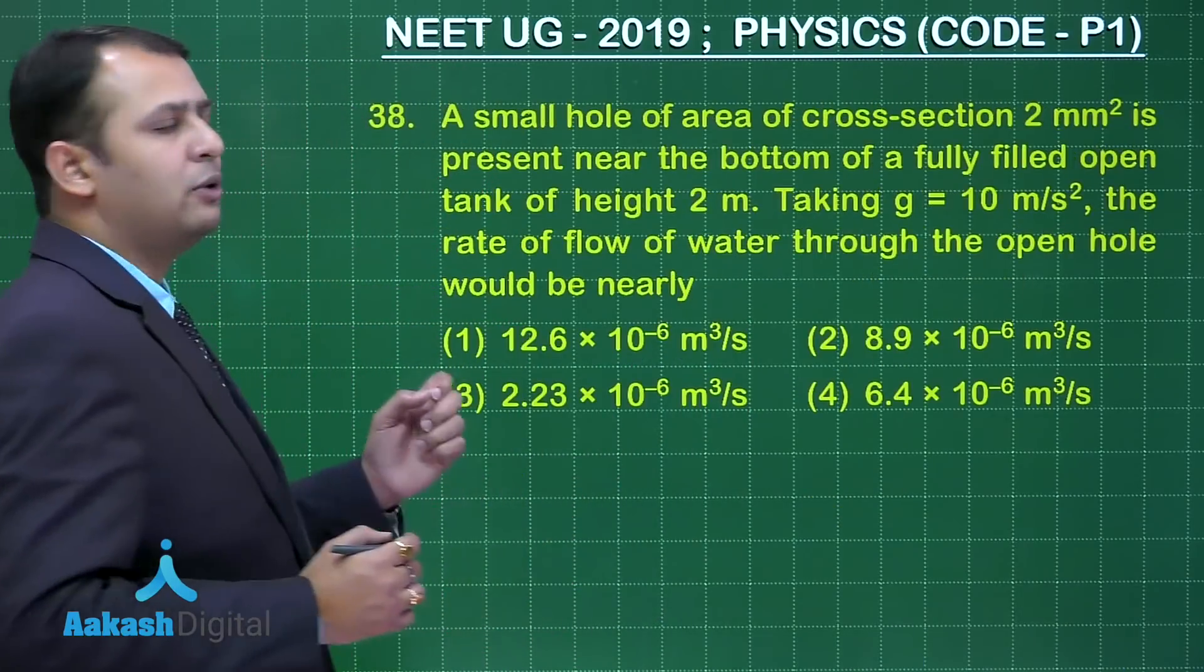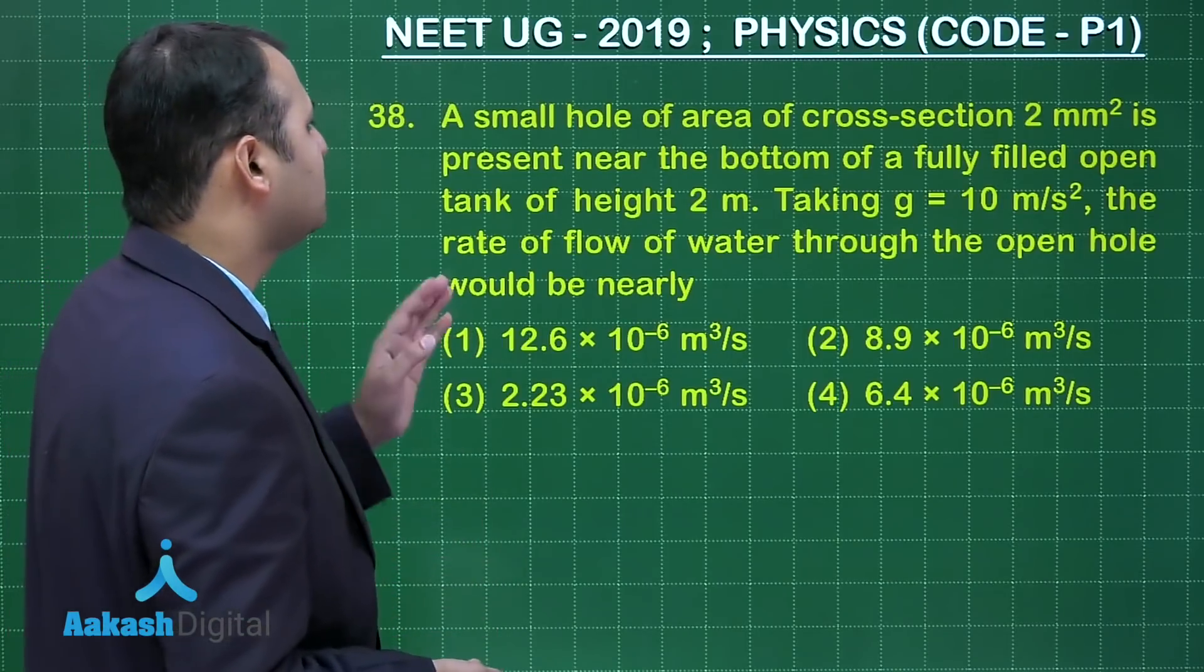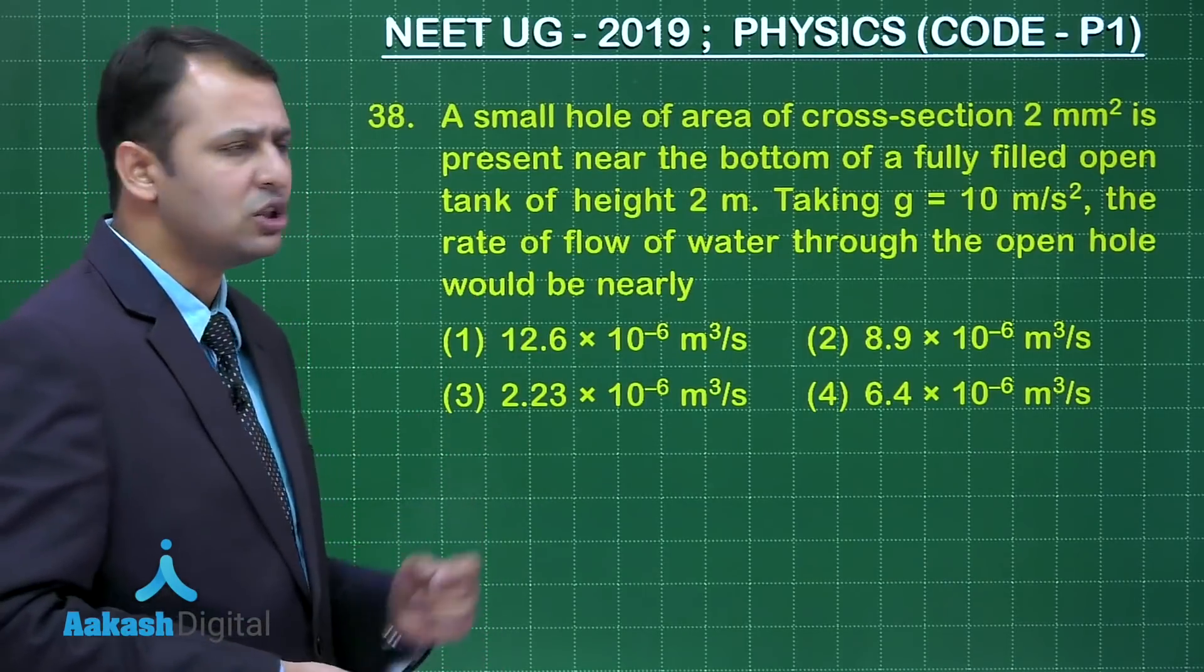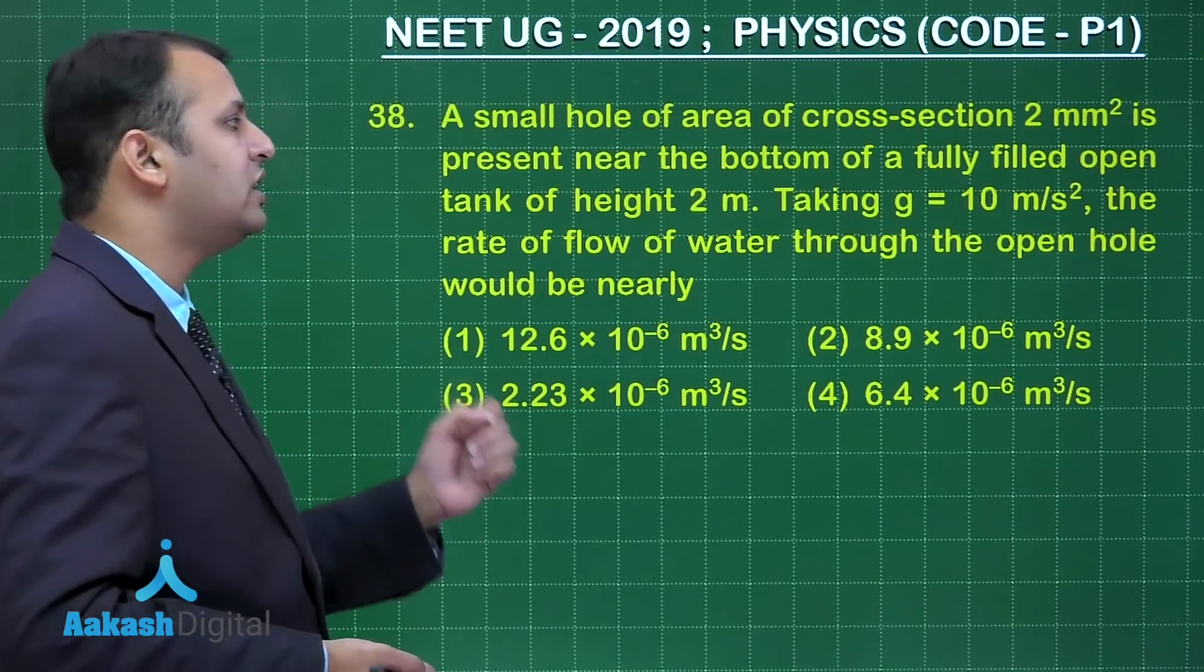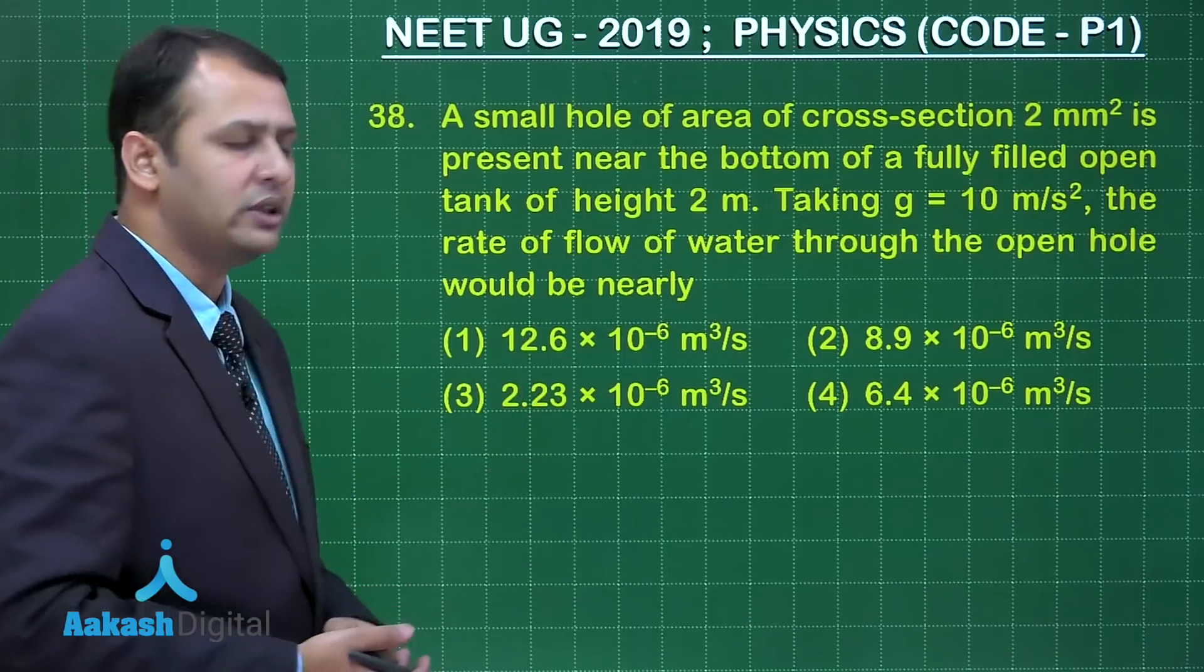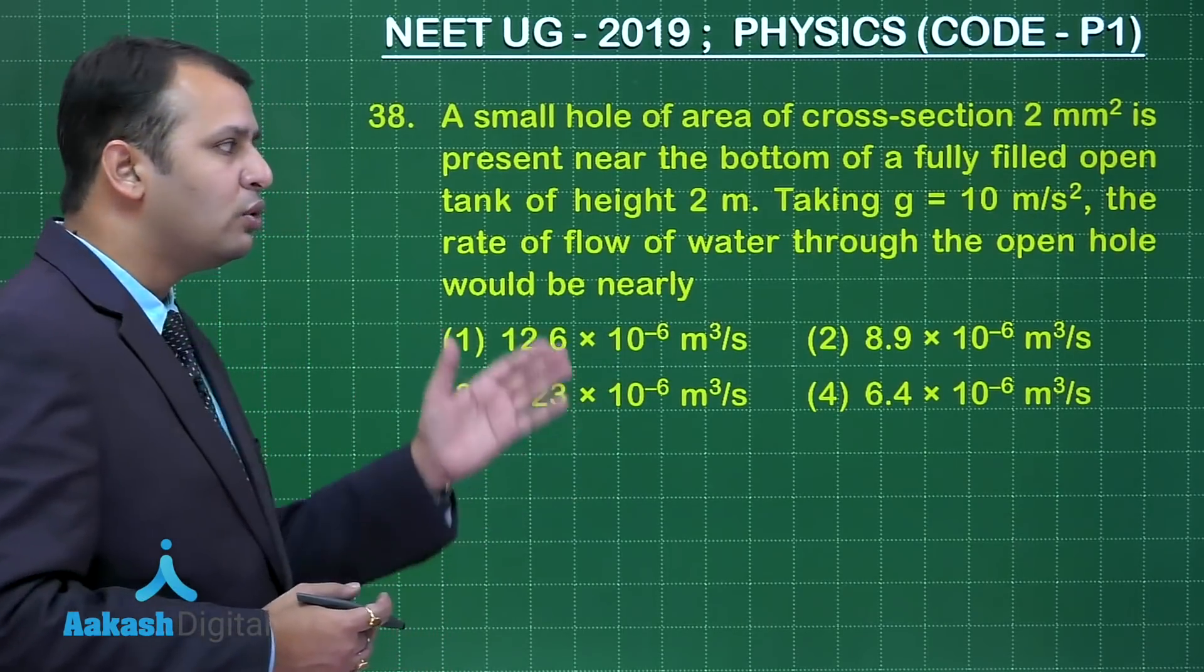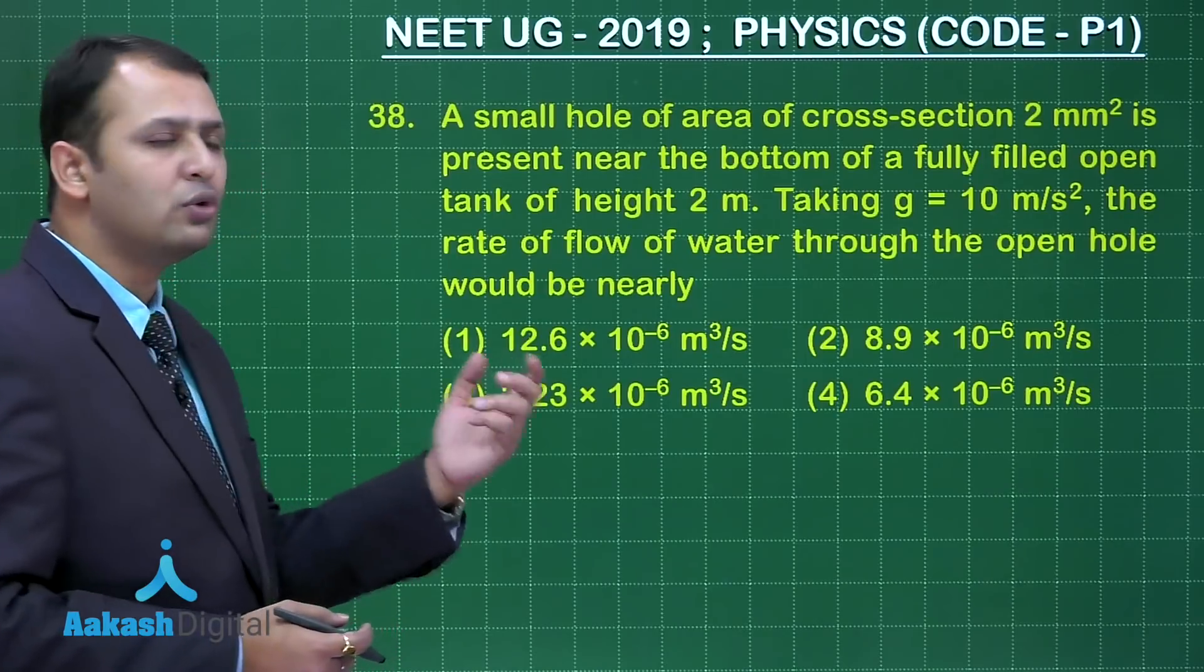The question you see here belongs to chapter mechanical properties of fluids. As per the question a small hole of area of cross section 2 mm square is present near the bottom of a fully open tank of height 2 meters. Taking g equals 10 meter per second square, the rate of flow of water through the open hole would nearly be.